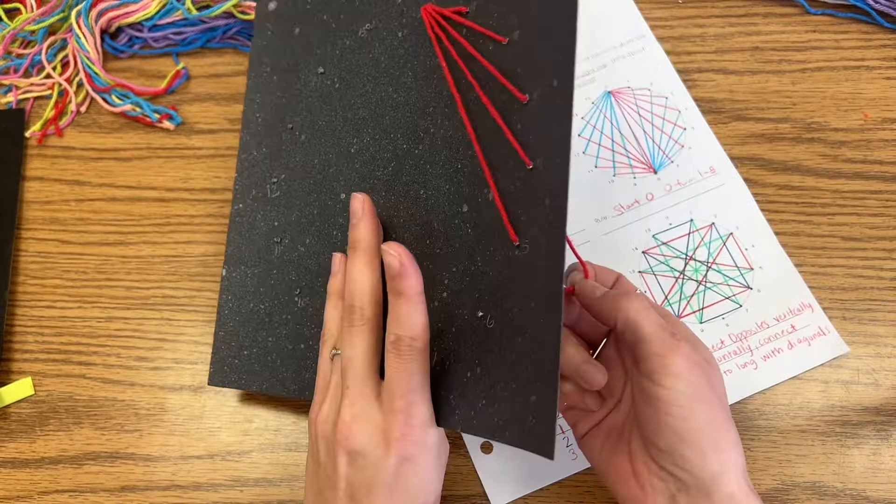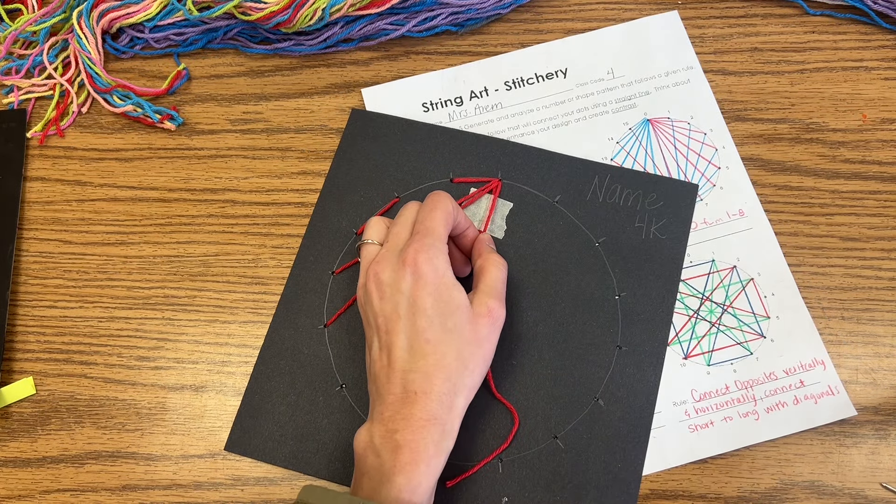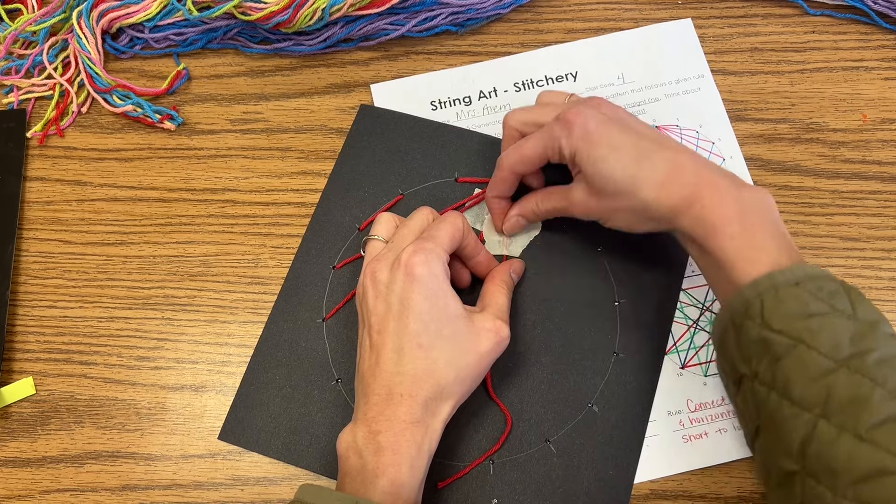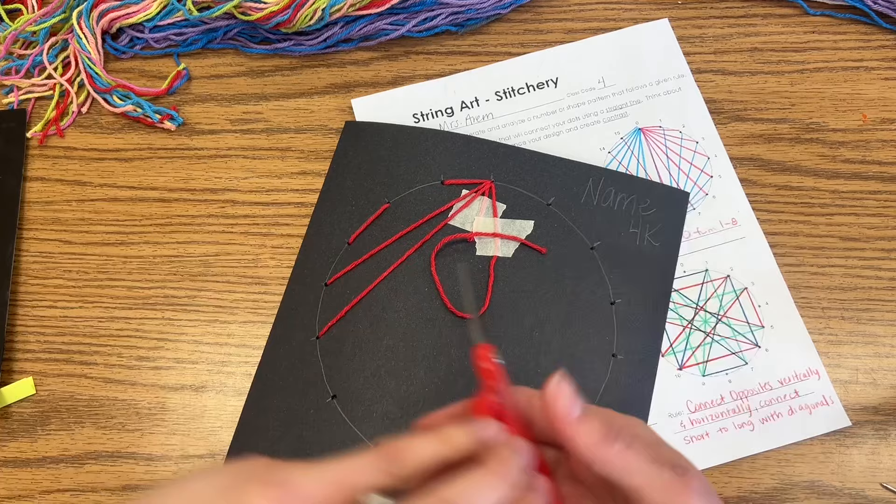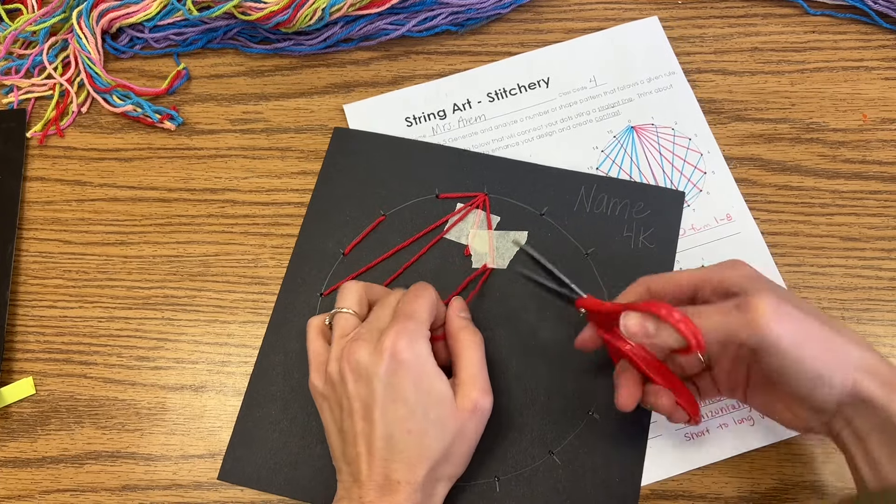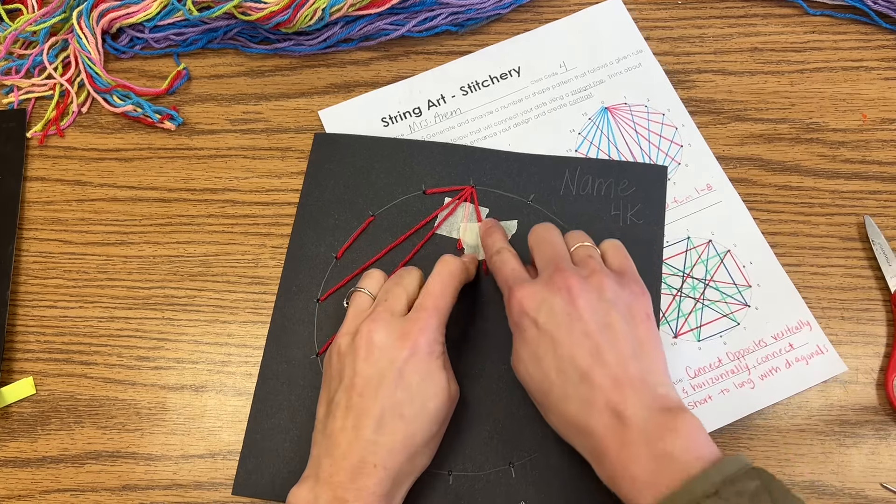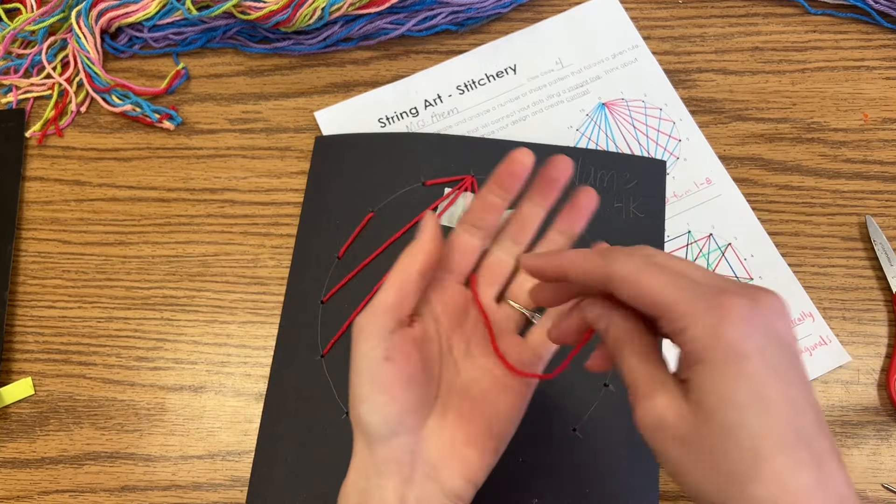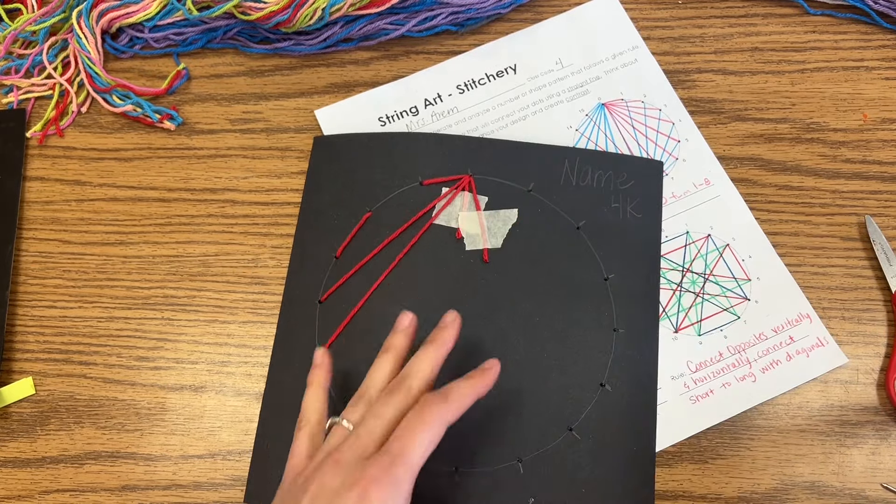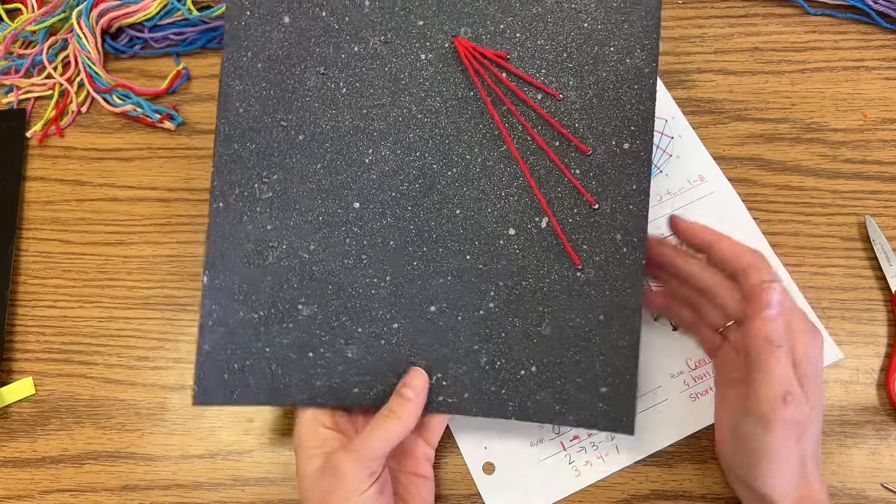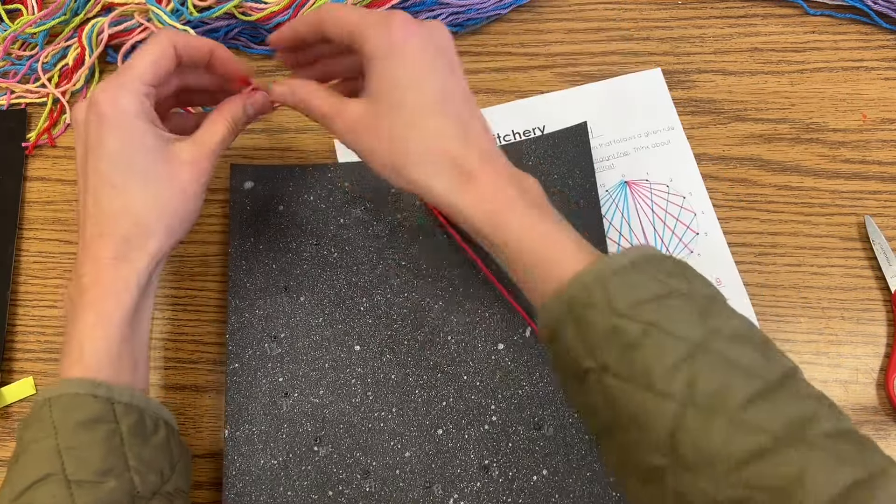I'm just going to go ahead and tape it on the back side. Now I don't need this, so in order to keep my backside from getting too crazy, I'm just going to trim it next to my tape. Don't throw these away. We're going to save these. I'll give you guys a bucket at your table to put any yarn scraps into.